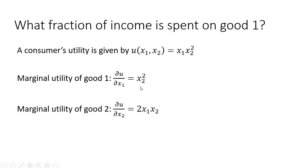For the marginal utility of good 2, take the partial derivative of the utility function with respect to x₂. Bring the exponent on x₂ down in front and subtract one from the exponent, giving us 2x₁x₂.